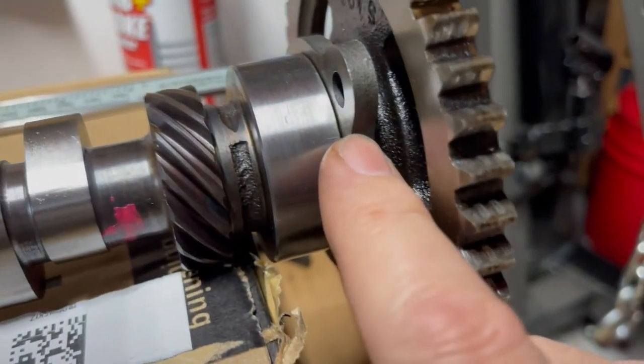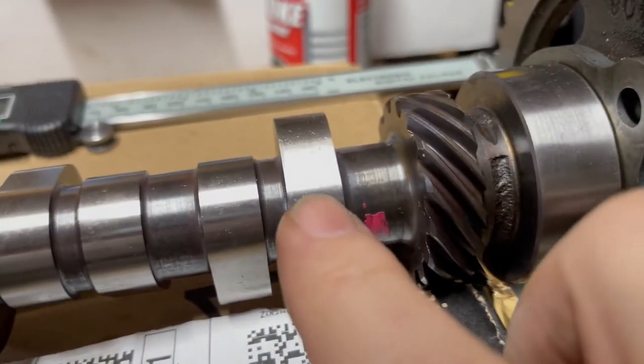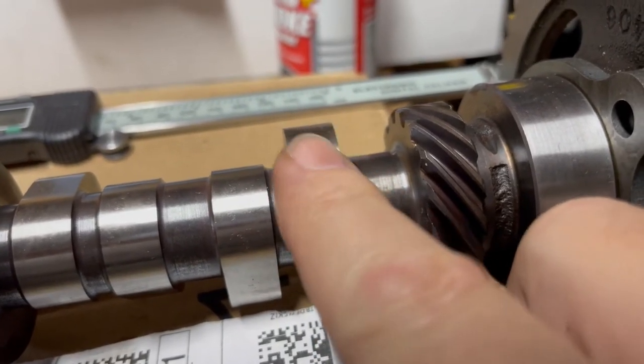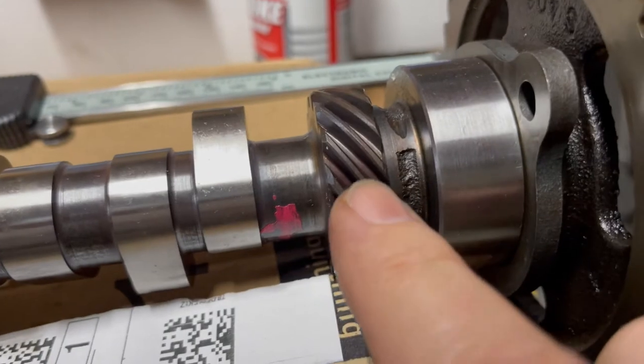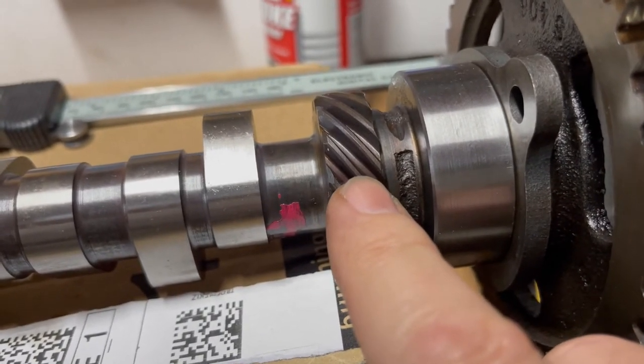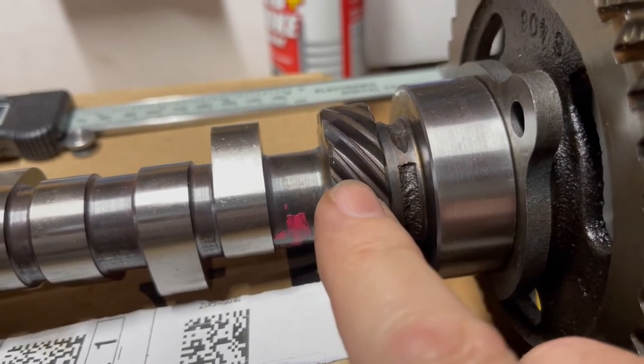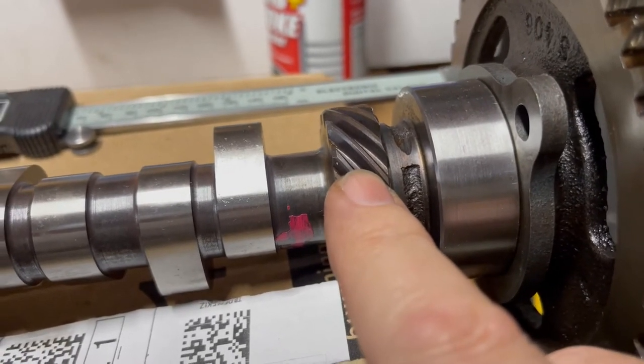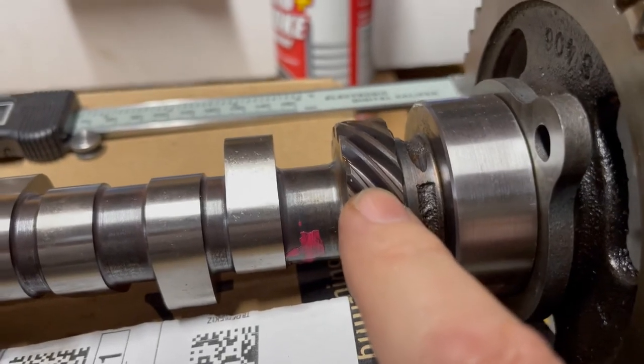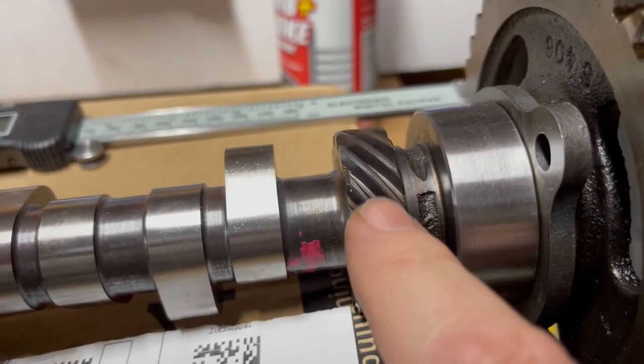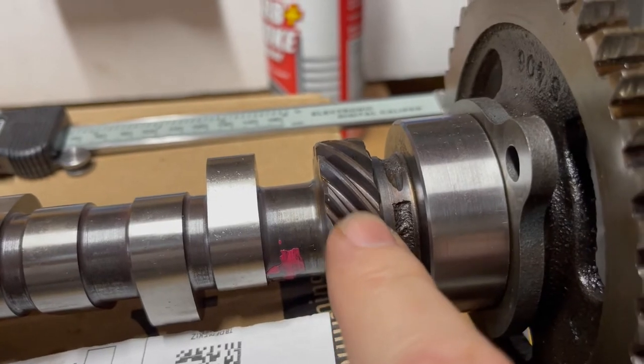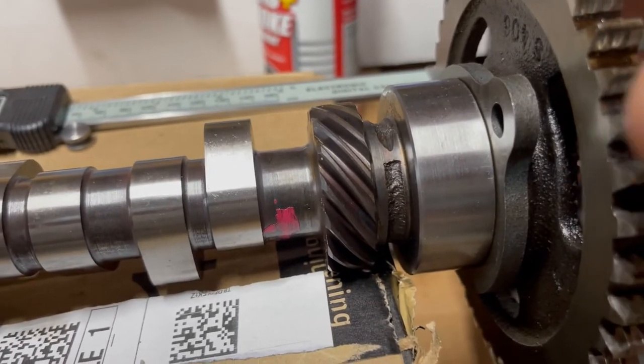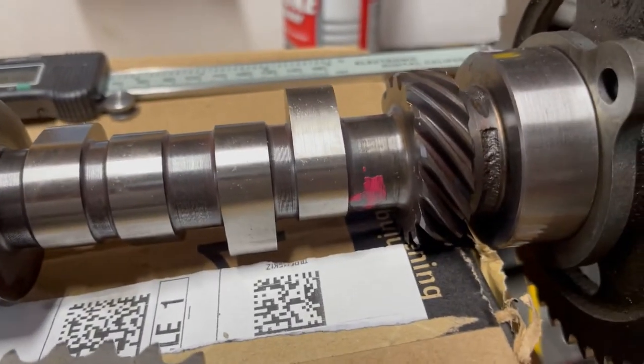If you have too much end play, you can see it'll let your cam lobe move back and forth, which won't be lining up with your lifters very well. Also, it'll affect your timing because as this moves in and out, this will turn your distributor slightly. Not much, but it's still going to change your timing, maybe a few degrees. It probably stays to one side just because of the forces on it as it's turning, but it is bad to have that going in and out.